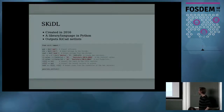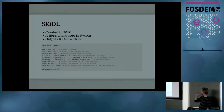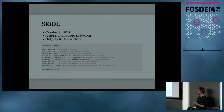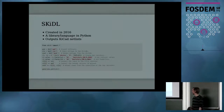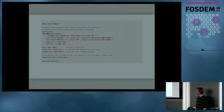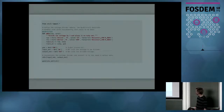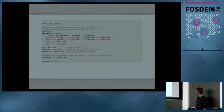The next one I came across is Skidl, created in 2016. It's a library embedded in Python. There's some operator overloading going on — the plus-equals has been overloaded to make connections, and there's an implicit circuit in the background being built up. When you use the generate netlist command, it produces a KiCad netlist. Skidl also has provisions for reusing sub-circuits, done through functions where the arguments are the inputs and outputs of the circuit.